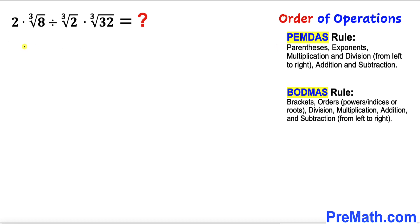According to our given rule we can write this one: 2 times the cube root of 8 divided by the cube root of 2, and then times, we are going to take care of the cube root of 32. Now let's focus on this part, cube root of 8. We can simplify this cube root of 8 and it turns out to be simply 2.